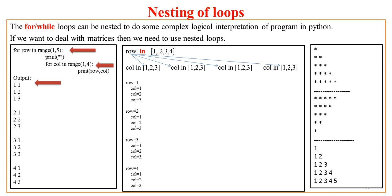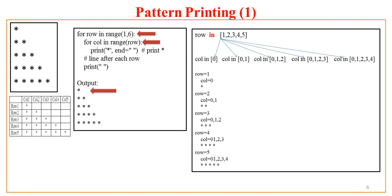Now let's try pattern printing — this is fun once you understand loops. You can play with patterns like this, as you may have done in C, C++, or Java. If you view the pattern just as lines of stars, there's no clue for programming. But if you're a smart programmer, you won't view it as lines of text — you'll view it as a row-column pattern.